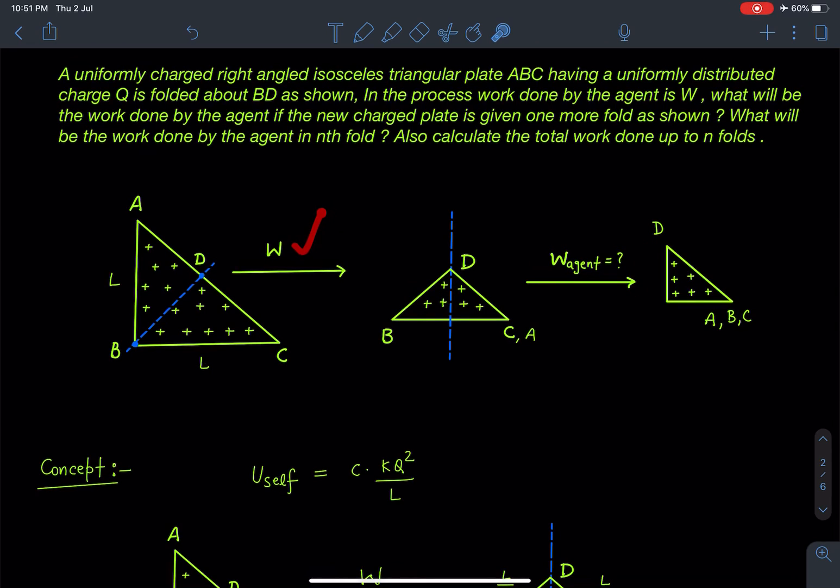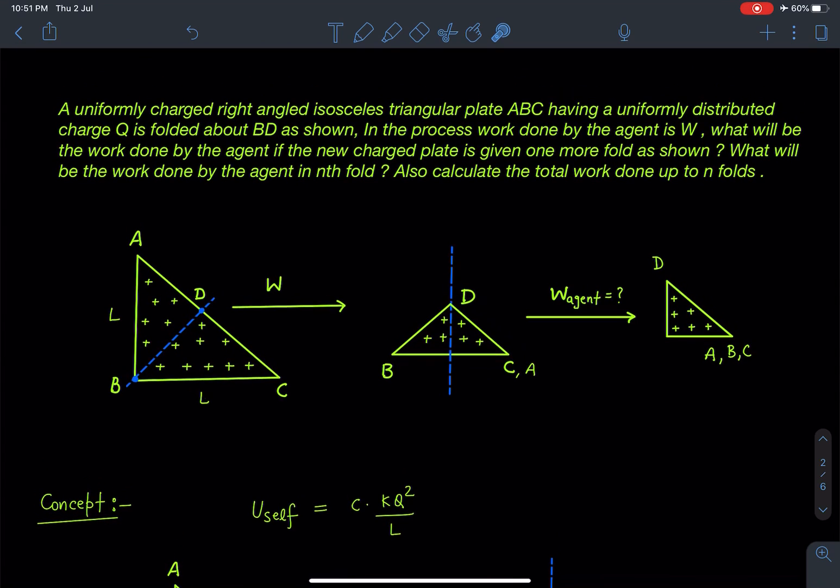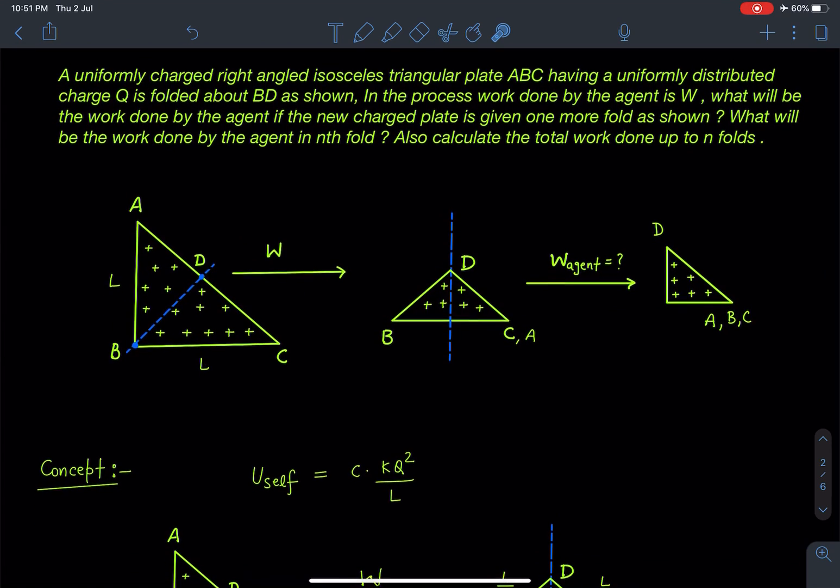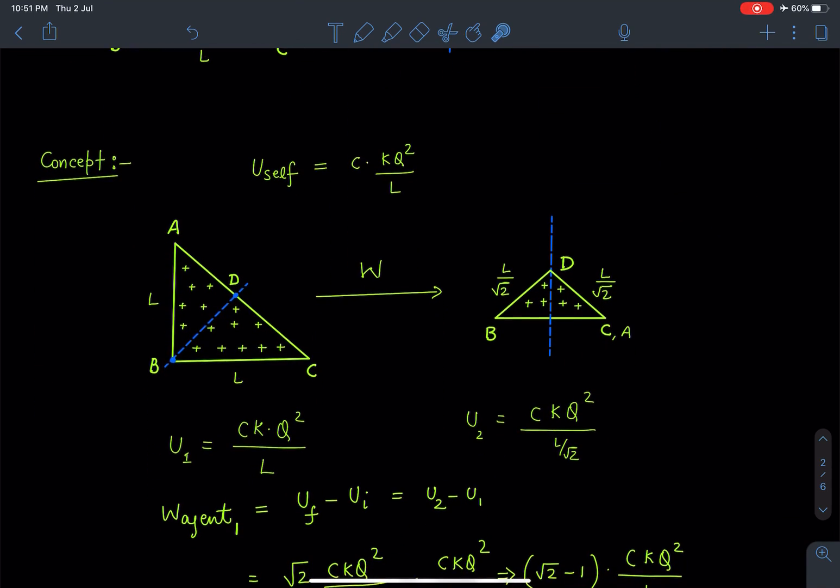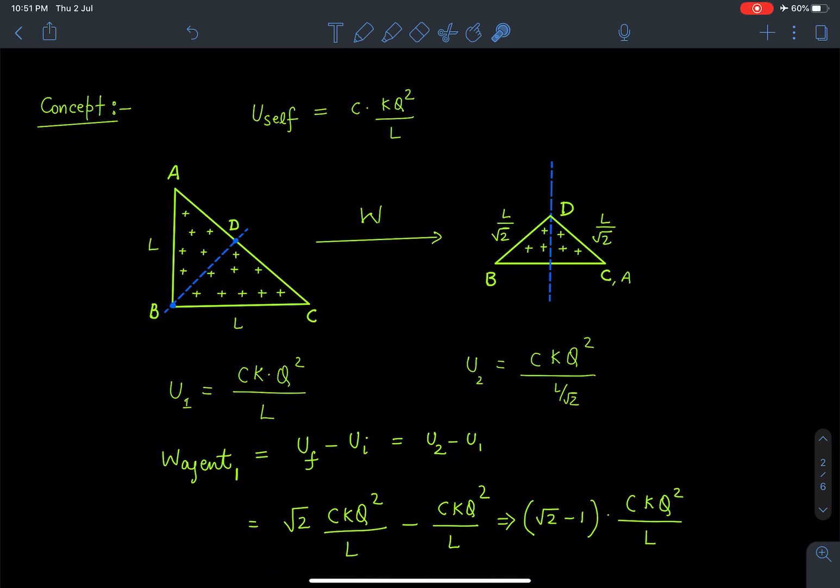So let's discuss this problem. First we will discuss about the concept part. So here it may not be possible to calculate this actual work done value in the first process, but in terms of this W we can calculate the rest of the answers. So as you can see, for any charged object we can write this self energy, self potential energy, as kq^2/L.